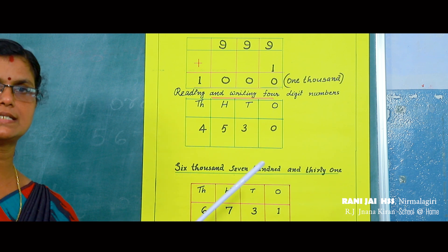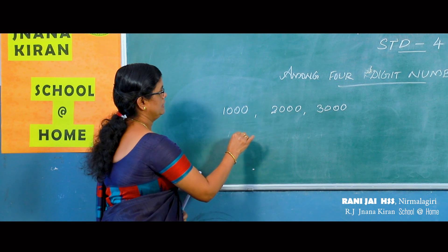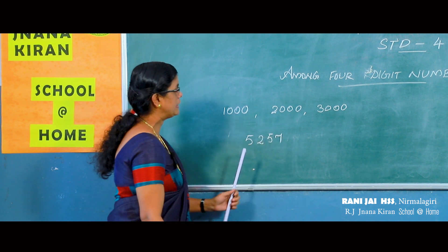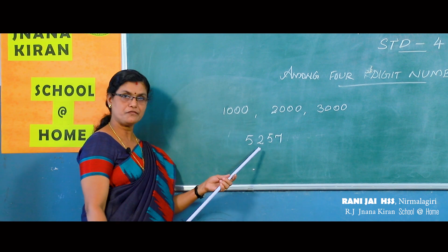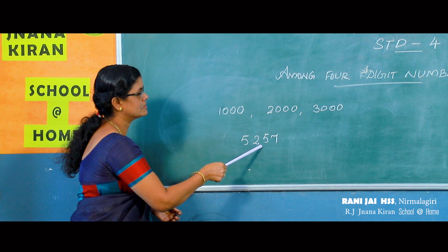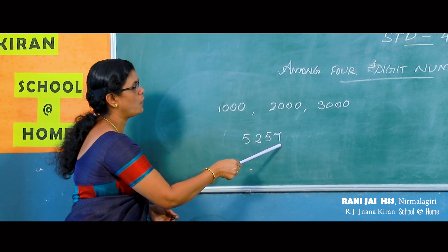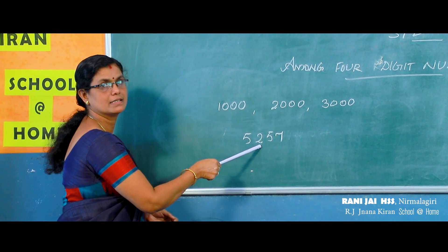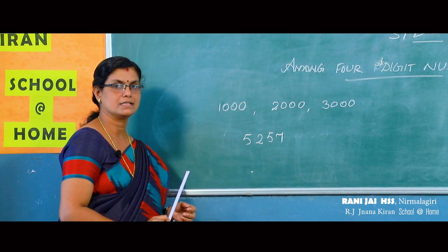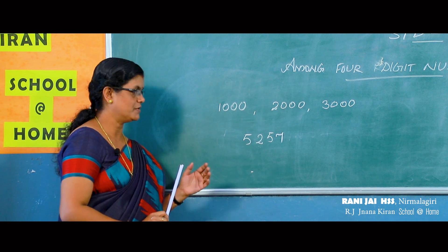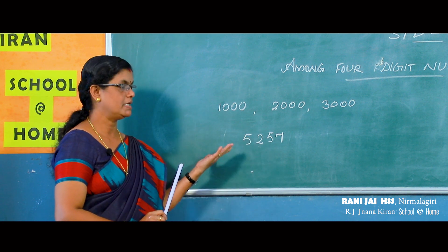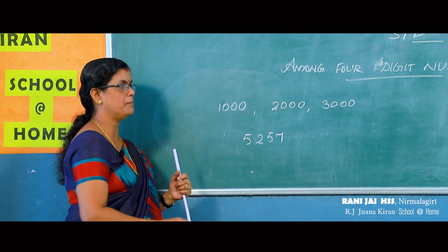Now let's read the next number. Look at the board — can you read this number? All of you try to read this number. These three digits you can read — you already learned this. Then add this five also, and how can you read this? Very good — 5257. Similarly you can read any four-digit number.